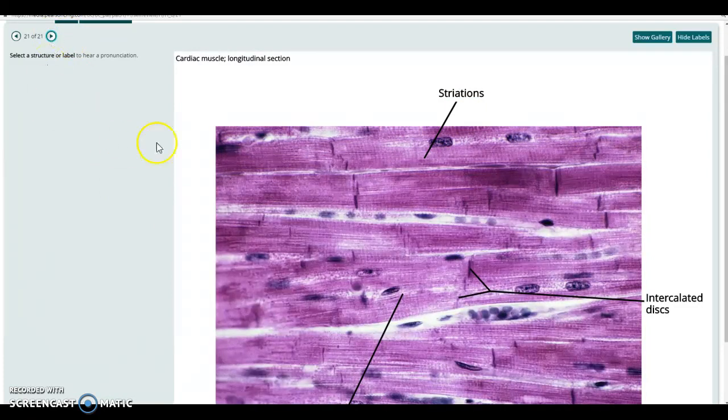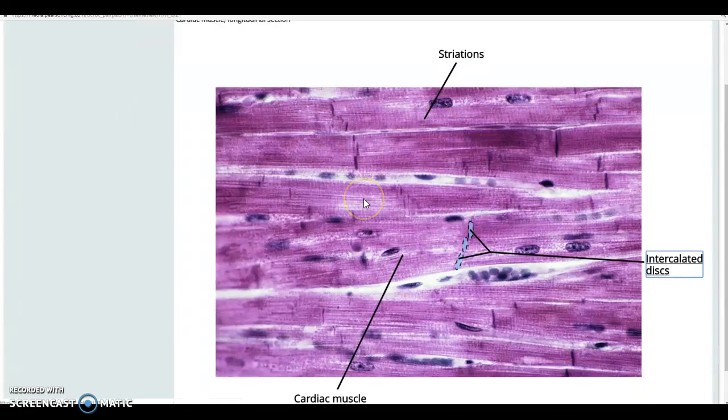And just another view with a slightly different stain, showing the intercalated discs between the cells, the nice striations of the cardiac muscle cells.